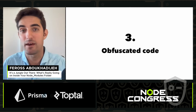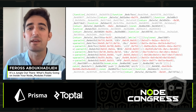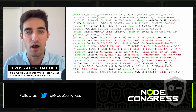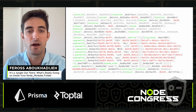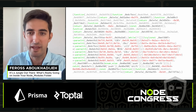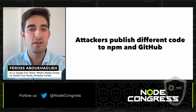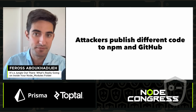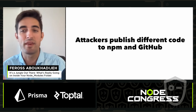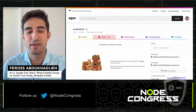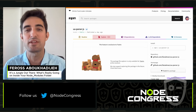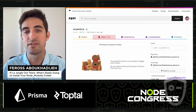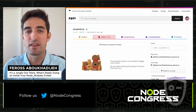Finally, we have obfuscated code — it's really hard to see at a glance what it's doing, although there are tools to attempt to deobfuscate it. There's also another kind of obfuscation: attackers can publish different code to NPM than they do on GitHub. Since NPM doesn't make it easy to see what code is actually in the package, a lot of people who evaluate a package rely on the GitHub code, with no guarantee that it's the same.